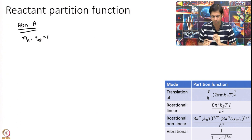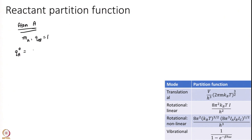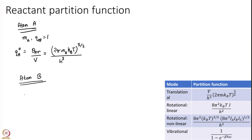For this simple analysis, we are going to assume that all electronic degeneracy is simply one — we are going to ignore it for simplicity. So Q_A naught is simply the translational partition function divided by volume, which is (2π M_A KBT)^(3/2) divided by H cubed. Similarly, Q_B naught correspondingly will be (2π M_B KBT)^(3/2) divided by H cubed.